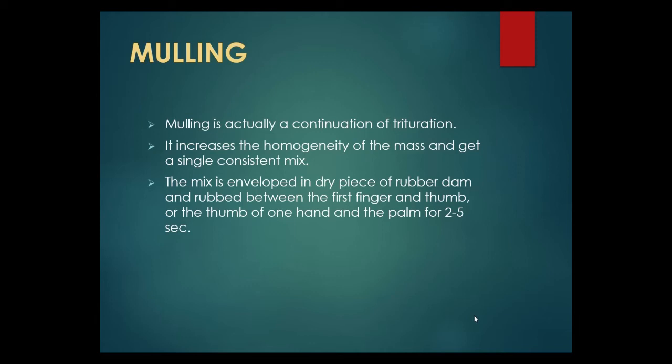Mulling is a continuation of trituration. It increases the homogeneity of the mass and produces a single consistent mix. The mix is enveloped in a dry piece of rubber dam and rubbed between the first finger and the thumb, or the thumb of one hand and the palm, for 2–5 seconds.